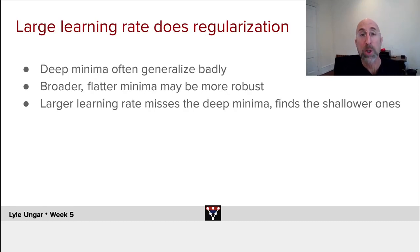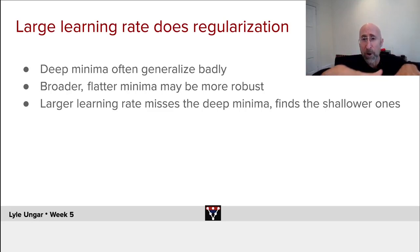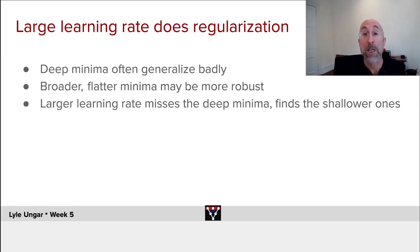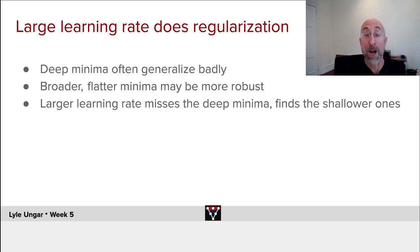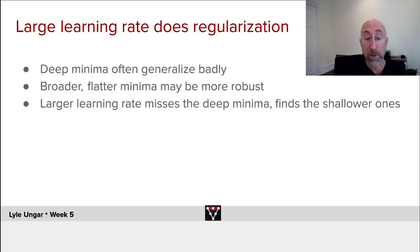If you take a large learning rate step, you're going to tend to jump over some of these deep ravines and land in something that's a very shallow, broad, wide minimum in the loss function. You're going to tend to fit the data less well, but in general these broad flat minima are more robust — less likely to overfit. Of course, if you take too big a step, you'll end up underfitting. So tuning the step size, particularly early on, affects where you converge and end up.